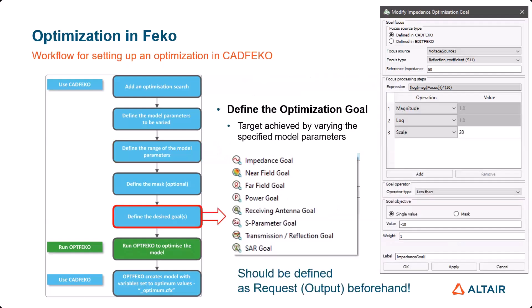The final step in CAD FICO for the optimization setting is to define the optimization goal. The optimization goal is the target which is achieved by varying specific model parameters. FICO provides many different optimization goals, such as impedance goal, near-field goal, far-field goal, power goal, receiving antenna goal, S-parameter goal, transmission, reflection goal, and SAR goal. Those goals should be defined as a request — meaning output — beforehand.